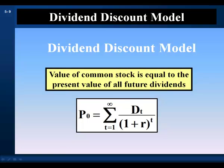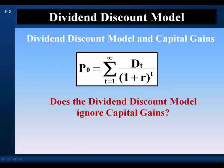Before we go to the application of this model in pricing stock, let's answer some questions about this model. The return investors expect on their investment consists of dividends and capital gains — an increase in the price of their shares. The dividend discount model discounts a stream of dividends, so does it ignore capital gains? Some say the dividend discount model is implausible because it ignores capital gains. But that's not true.